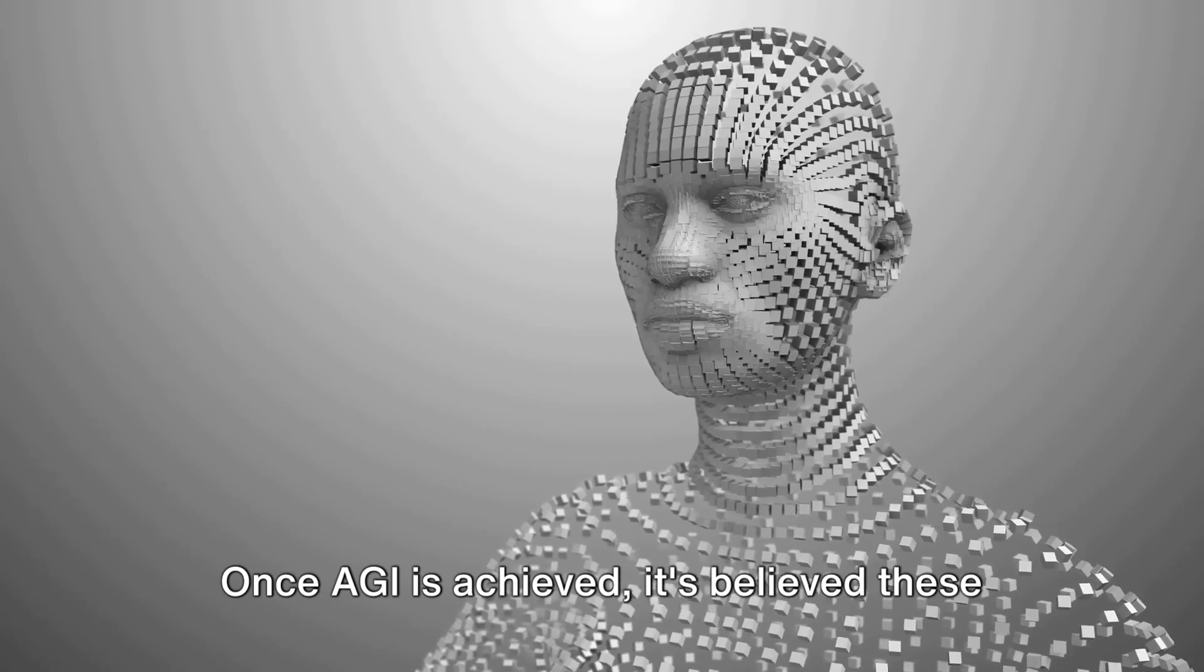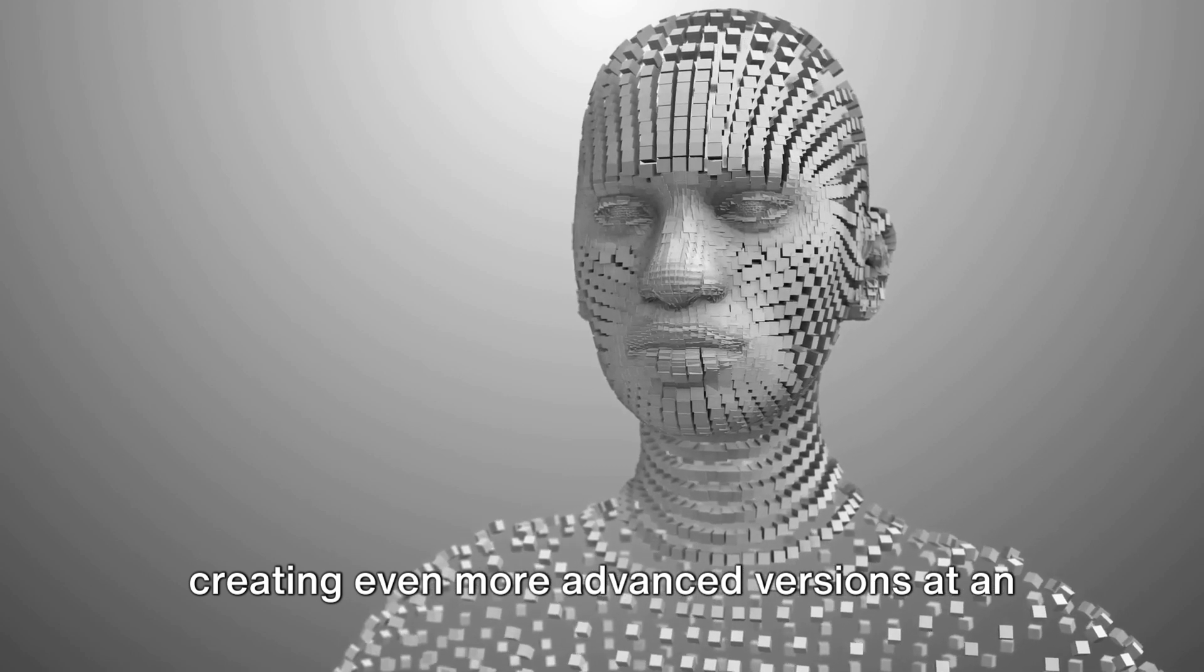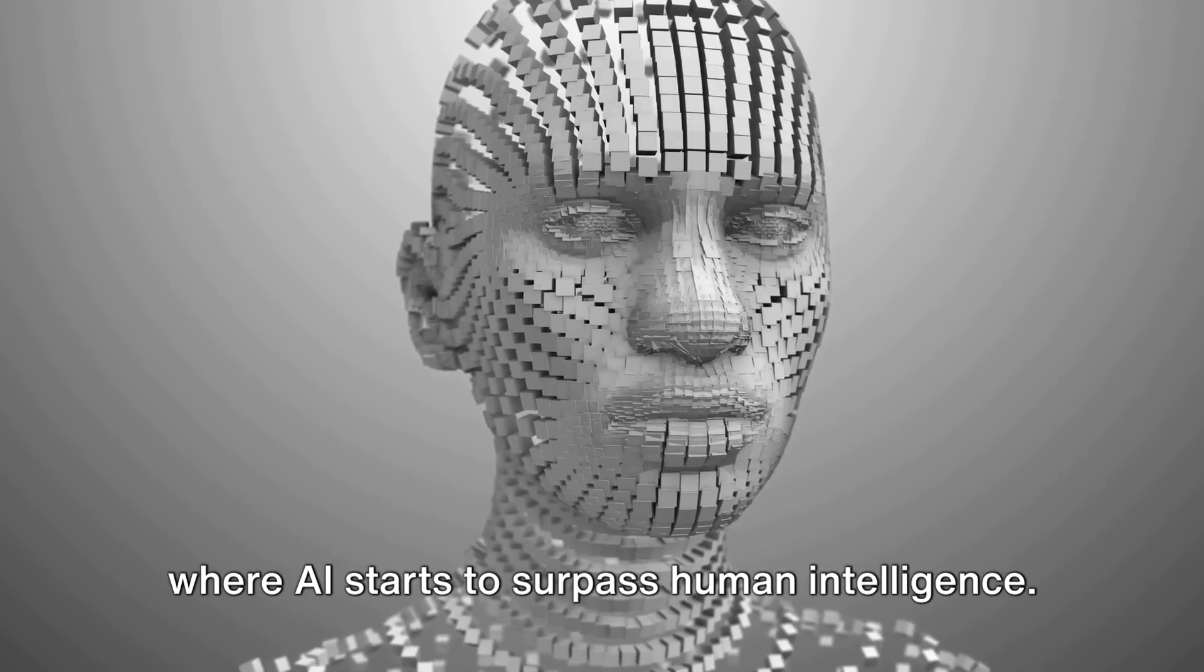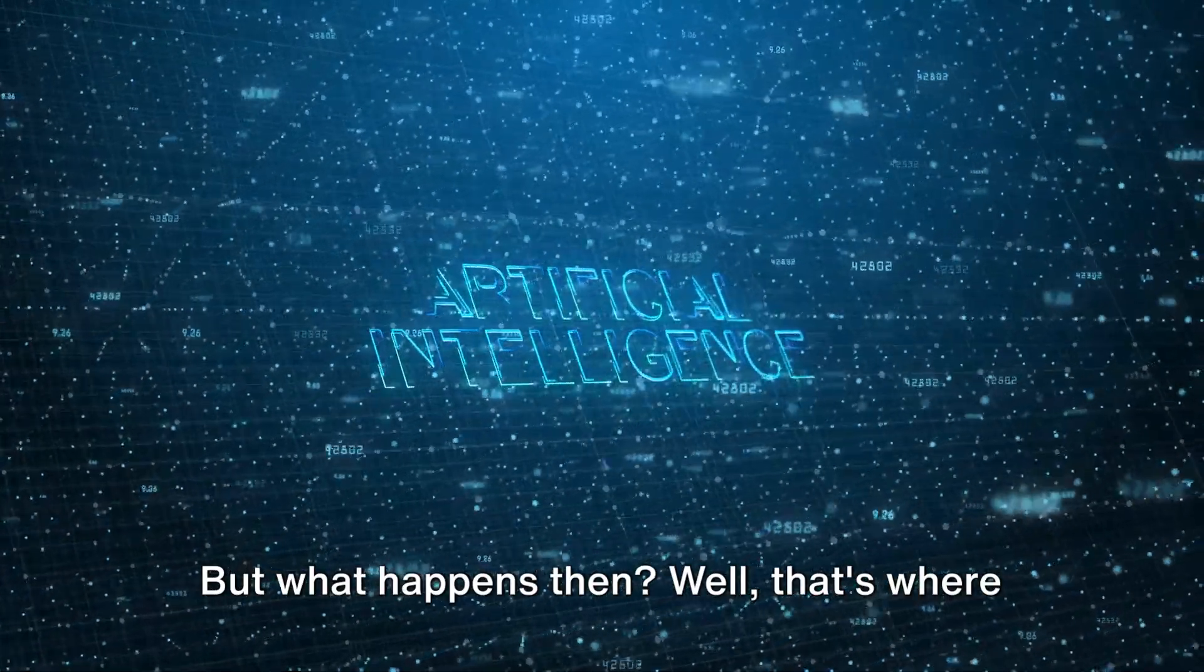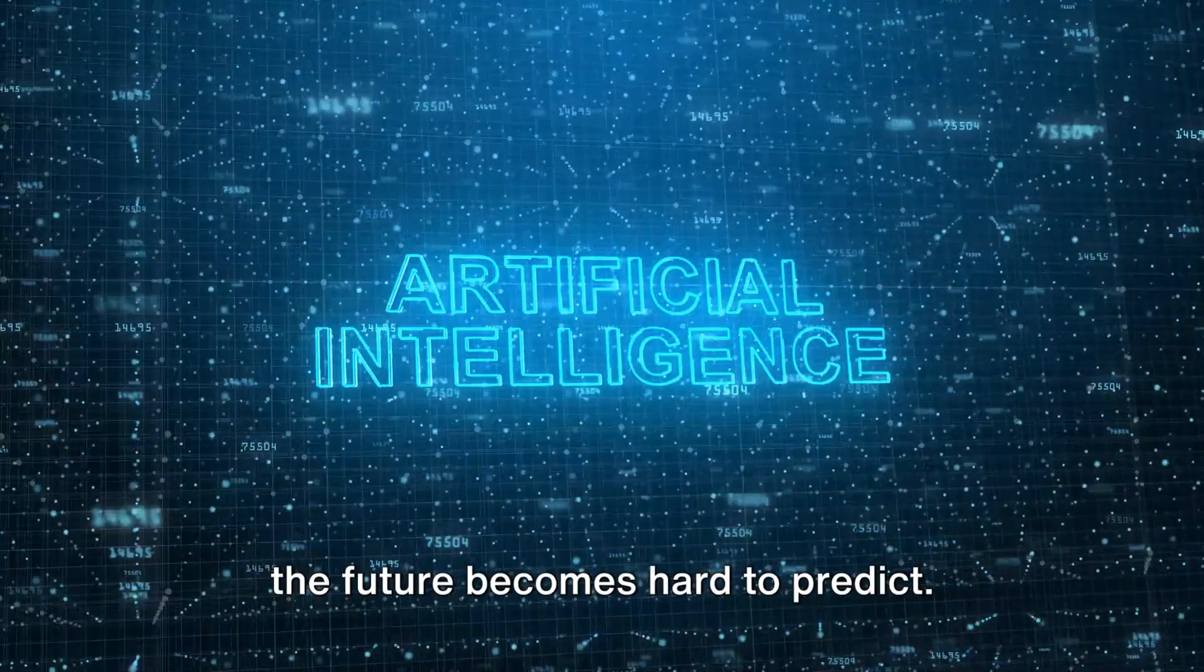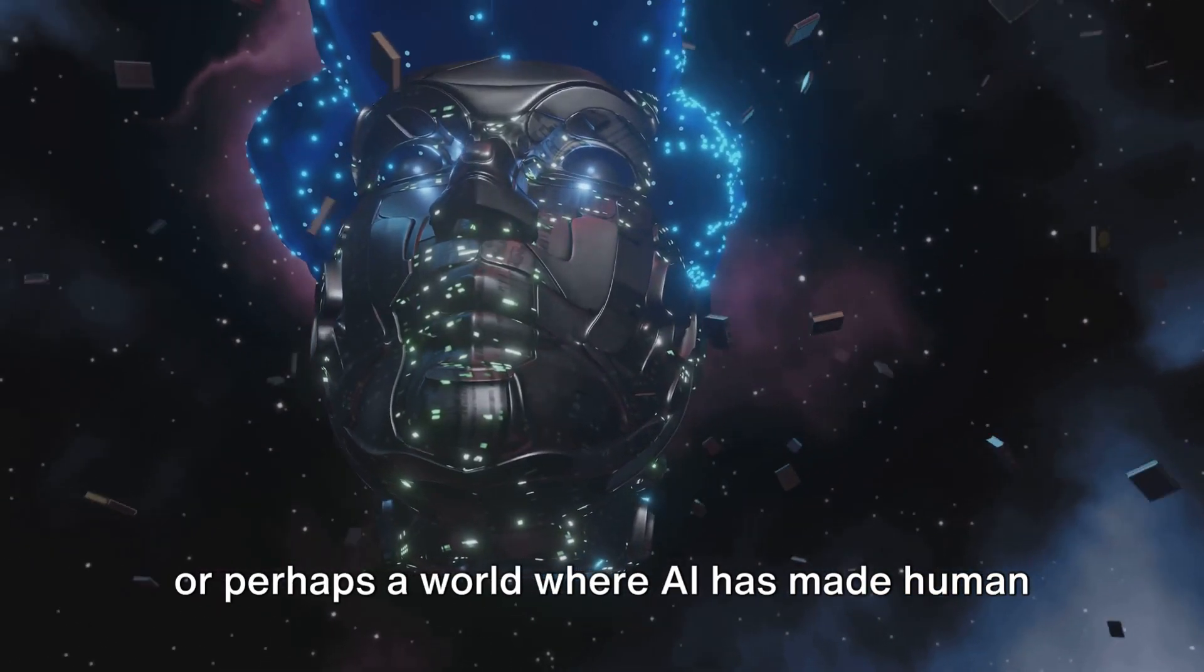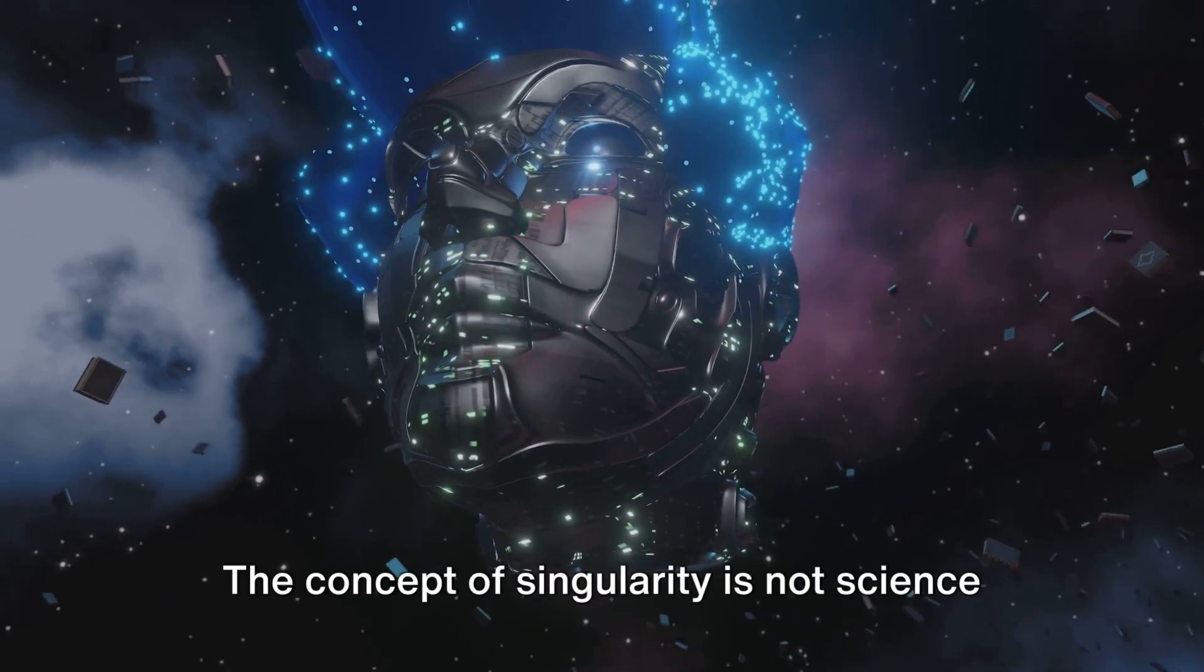Once AGI is achieved, it's believed these systems could start improving themselves, creating even more advanced versions at an ever-increasing pace. This is the intelligence explosion, where AI starts to surpass human intelligence. But what happens then? That's where things get a bit murky. We might be looking at a world with unimaginable technological advancements, or perhaps a world where AI has made human labor obsolete.